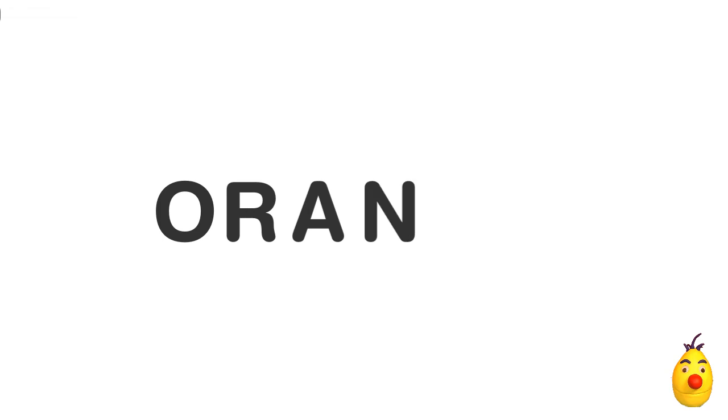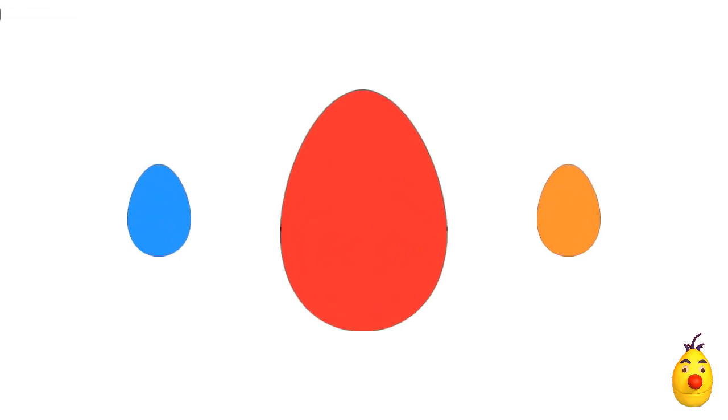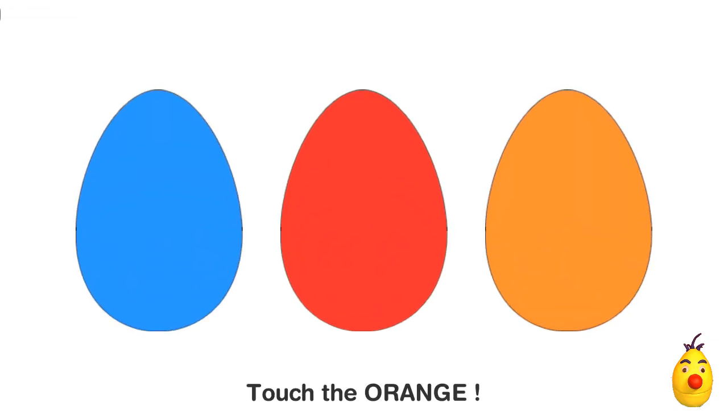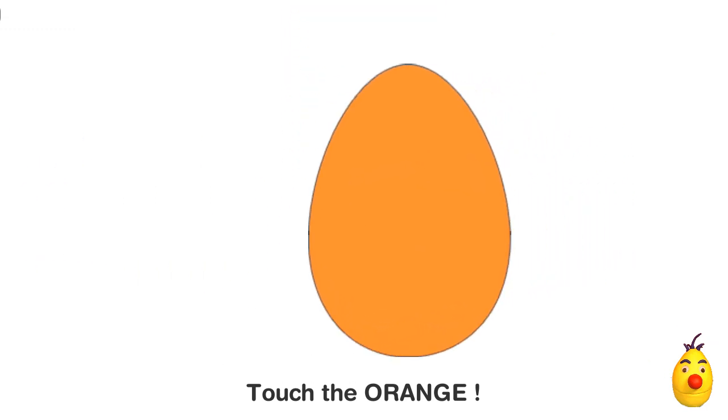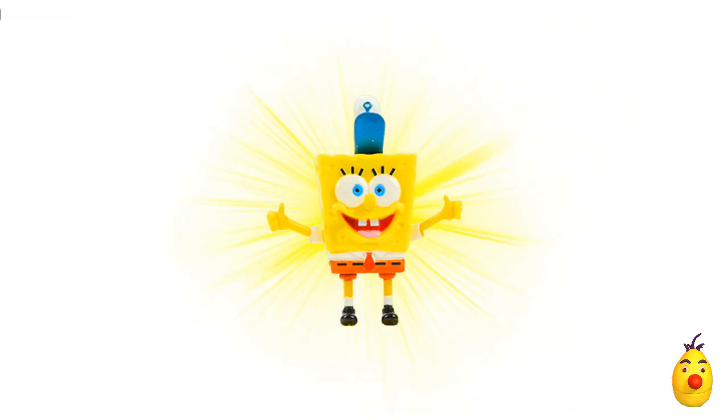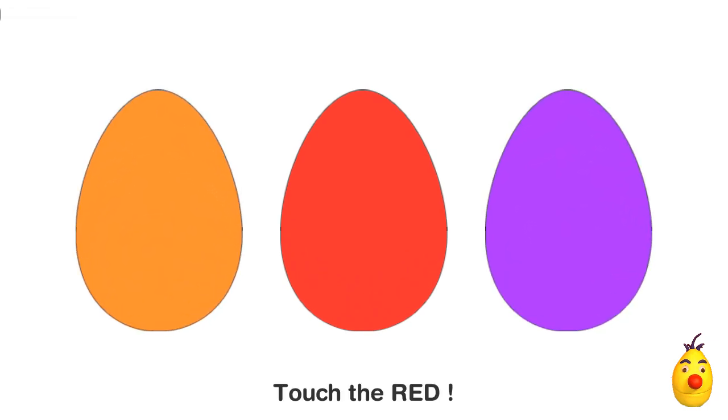O, R, A, N, G, E — Orange. Touch the orange egg. R, E, D — Red. Where is the red egg?